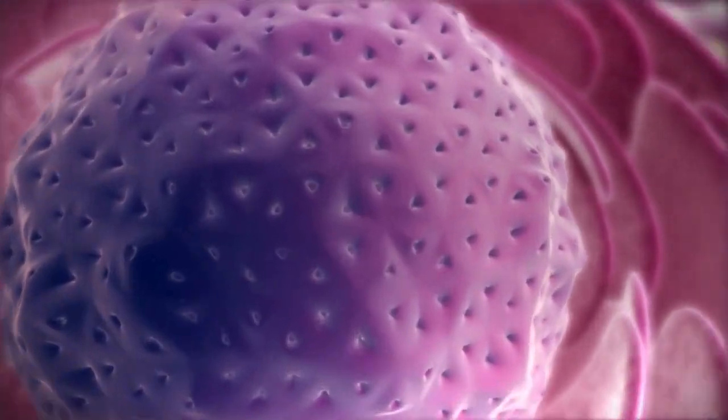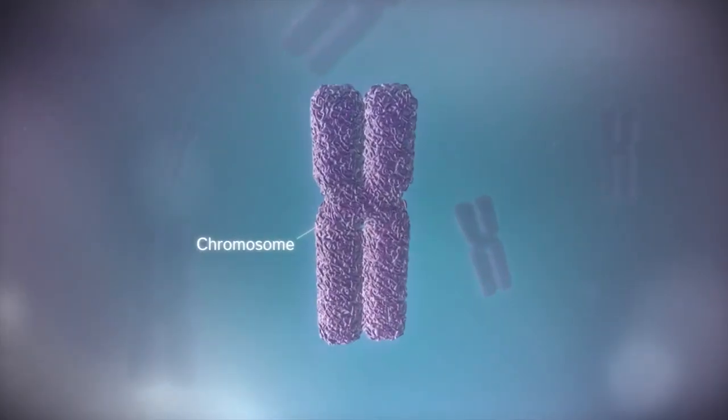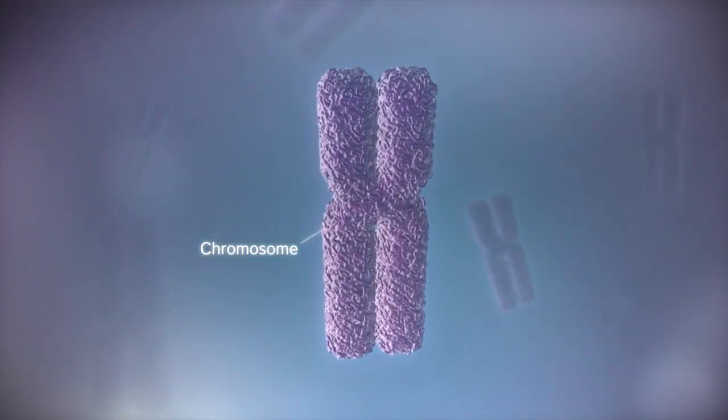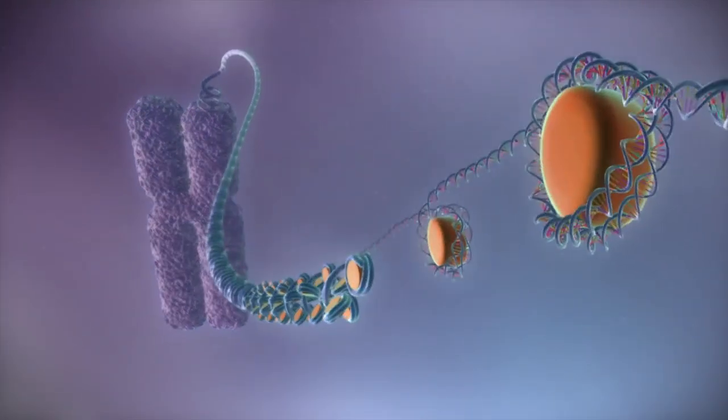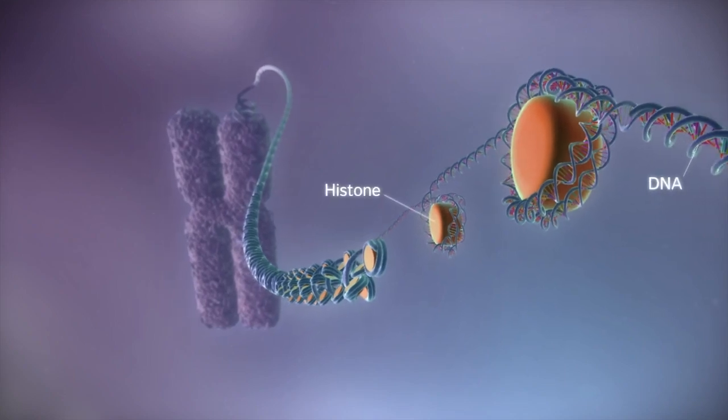In humans, the genome is split between 23 pairs of chromosomes. Each chromosome contains a long strand of DNA, tightly packaged around proteins called histones.